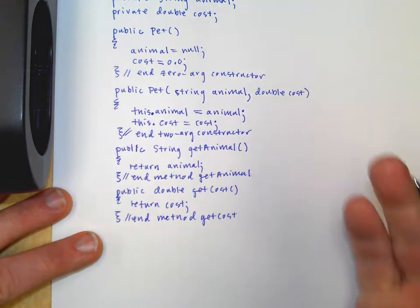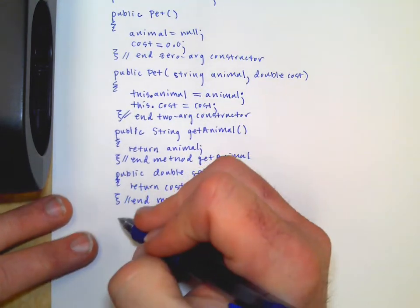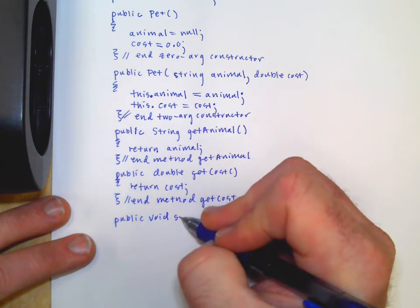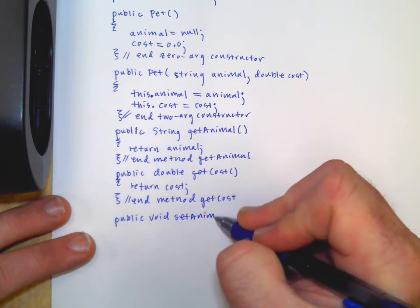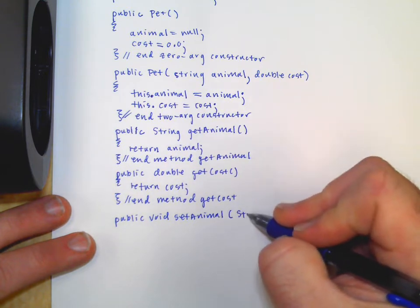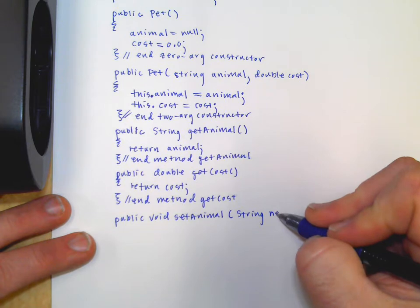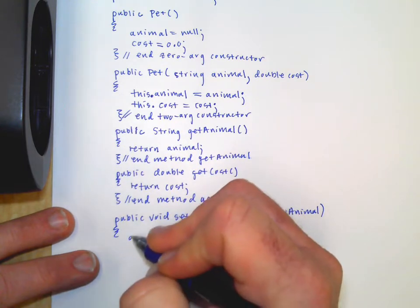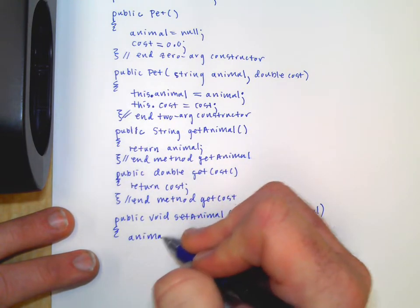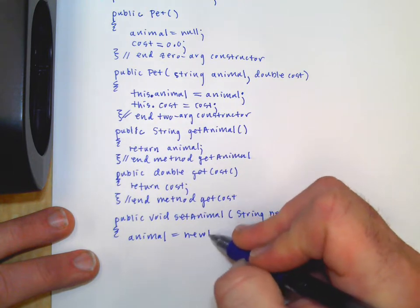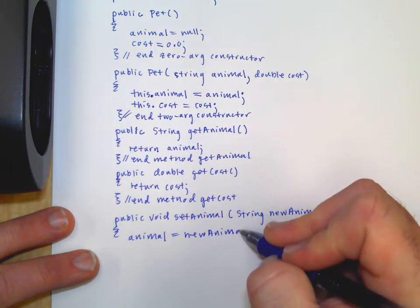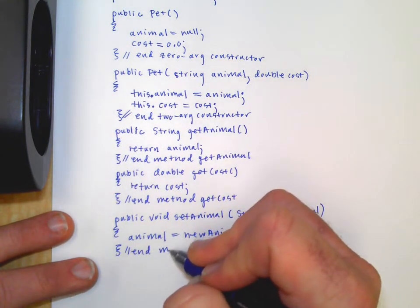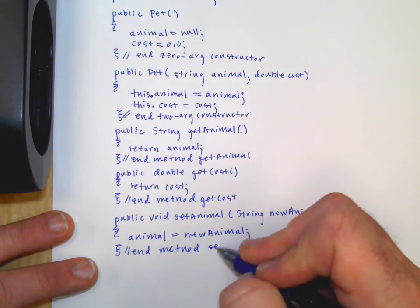And we could do setters, mutators. They're public. They don't return anything. So we get void. We could say set. And they would take an argument, a string, that can be like a new animal. And it would just be animal equals new animal. So this is a way to change the private instance variables. So these are called setters, they're called mutators. End method set animal.